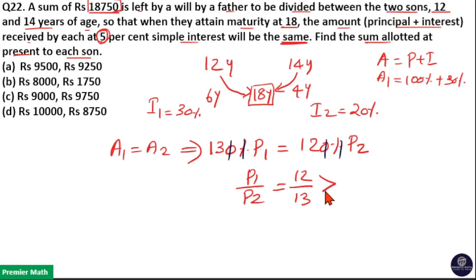Now, 12 plus 13 is 25 parts. This 25 parts is equal to 18,750 in the question because principal for the first son and second son will be equal to 18,750.